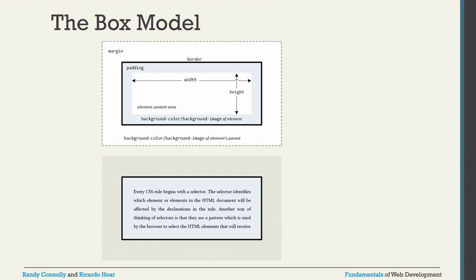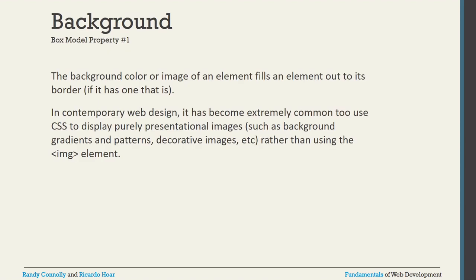The box model has several important components. First is the border — you can display a border around the box. Next is the background color or background image. Then there is the height and width of the border. Another component is padding — where your content is situated inside the box. And finally there is margin — which covers left, right, top, and bottom spacing. These are the key components of the box model.